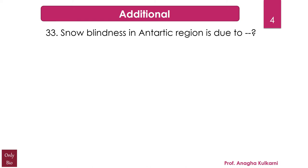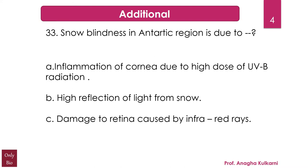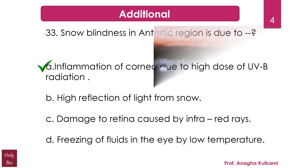The next question: snow blindness in the Antarctic region is due to — options: A) inflammation of the cornea due to high dose of UV radiations, B) high reflection of light from the snow, C) damage to the retina caused by infrared rays, D) freezing of fluids in the eye by low temperature. The correct answer is A — inflammation of the cornea due to high dose of UV radiations.